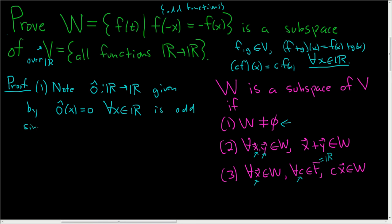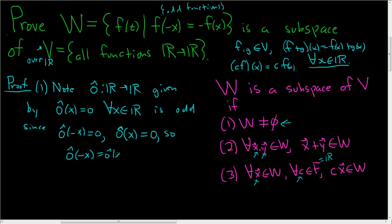Let's check: if we take zero of negative x, the zero function just sends it to zero. And zero of x also just sends x to zero. So zero of negative x equals zero equals negative zero of x, and this holds for all x in ℝ. So the zero function is certainly an odd function, meaning it is inside W. That takes care of condition one — W is non-empty.